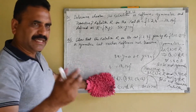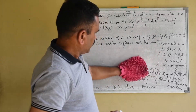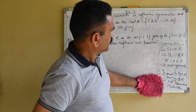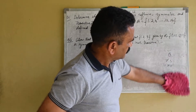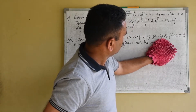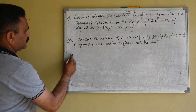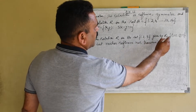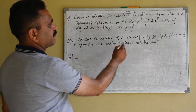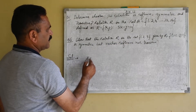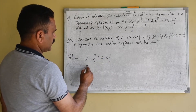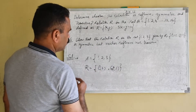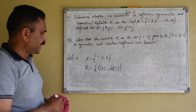This is question number 6 — I am taking a few problems; you will try the rest of the exercise. Show that the relation R in the set {1, 2, 3} given by R = {(1, 2), (2, 1)} is symmetric but neither reflexive nor transitive. Let the set be A, and the relation R = {(1, 2), (2, 1)}, having two ordered pairs.